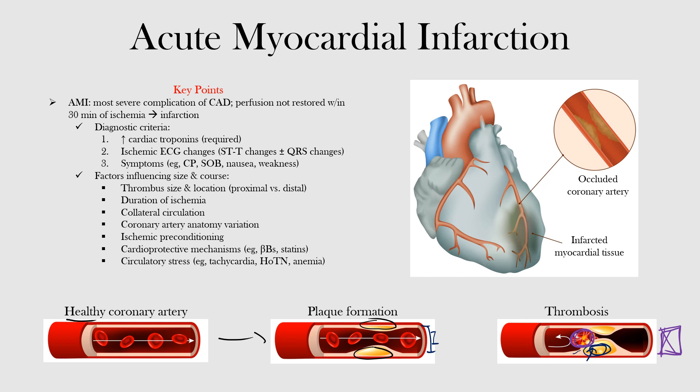On the EKG, we may see ST segment deviations such as ST elevation or ST depression. We can also see T wave changes such as T wave inversion, T wave peaking, or T wave flattening, as well as pathological Q and R waves. We will look at all these EKG features in more detail in future lectures.